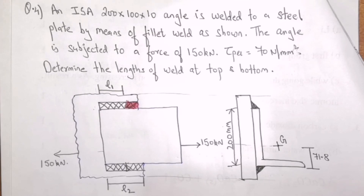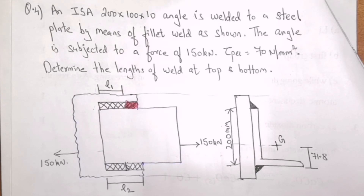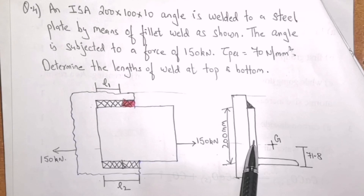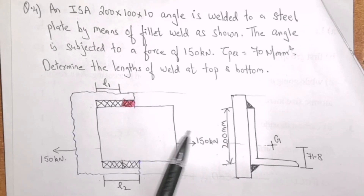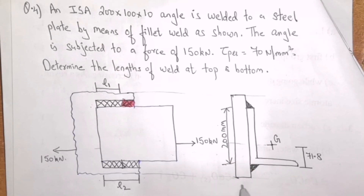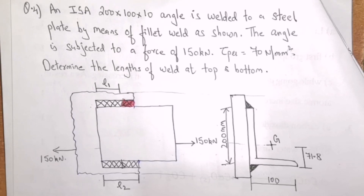The question says: an ISA 200×100×10 angle is welded to a steel plate by means of a fillet weld. The angle is subjected to a force of 150 kN, and the permissible shear stress is 70 N/mm². Determine the lengths of the weld at the top and bottom. The location of the centroid is given at a distance of 71.8 mm from the bottom edge. ISA stands for Indian Standard Angles. The dimensions 200×100×10 mean: 200 mm is the longer side, 100 mm is the shorter side, and 10 mm is the thickness.